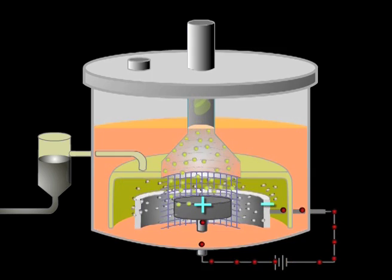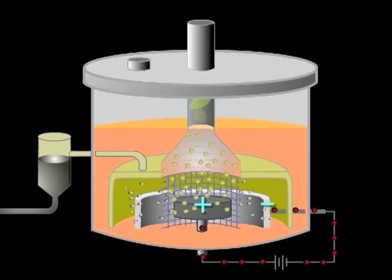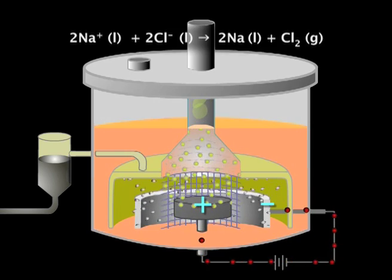Meanwhile, chlorine gas bubbles up from the anode into a separate vent. Here's the equation for the overall reaction.